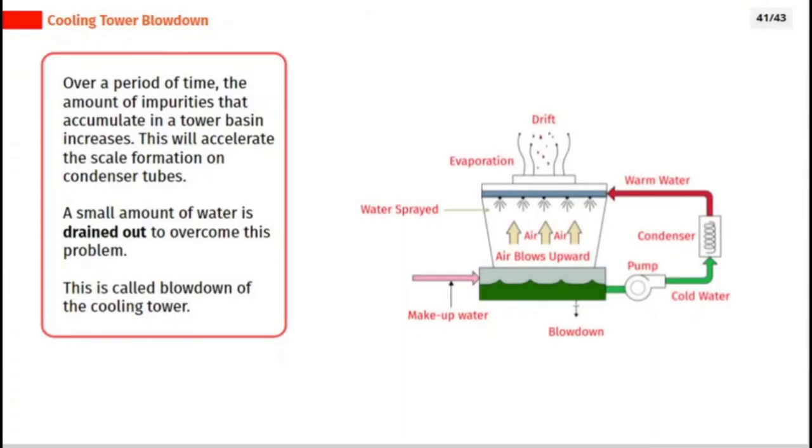Over a period of time, the amount of impurities that accumulate in a tower basin increases. This will accelerate the scale formation on condenser tubes. A small amount of water is drained out to overcome this problem. This is called blowdown of the cooling tower.